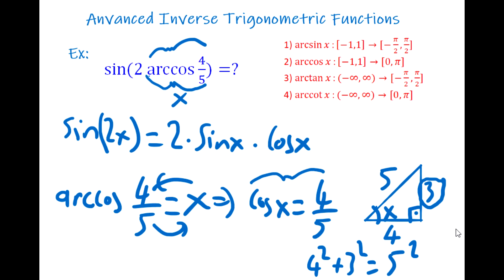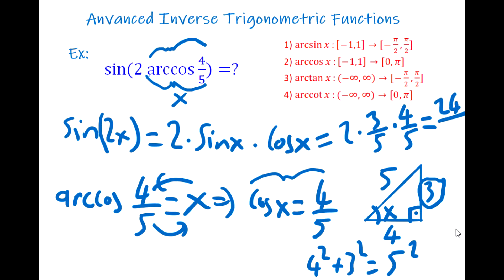Now our special right triangle is fully known. We compute 2·sin(x)·cos(x): sine x is opposite over hypotenuse = 3/5, and cosine x = 4/5. So we have 2 × (3/5) × (4/5) = 24/25. The answer to this question is 24/25.